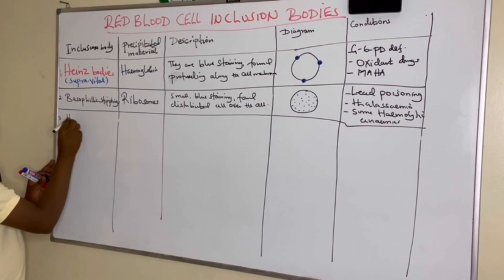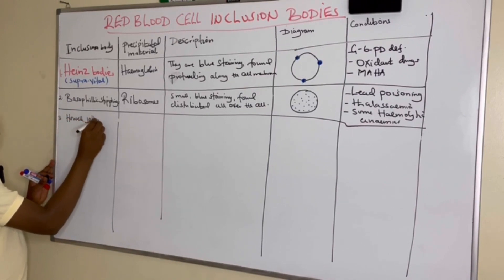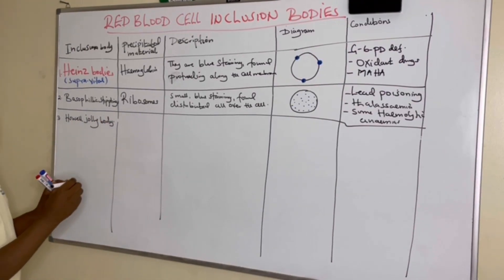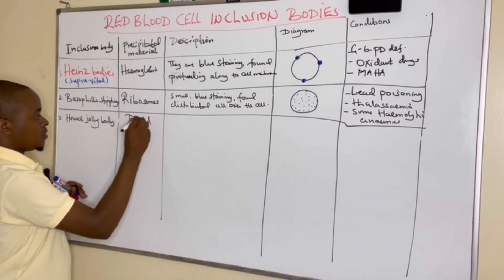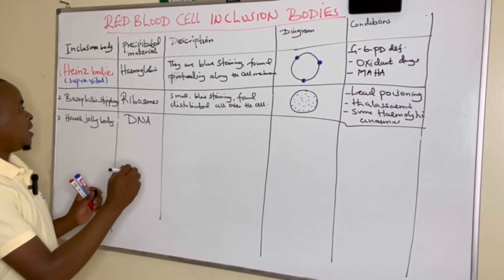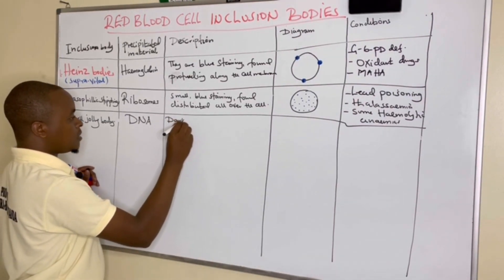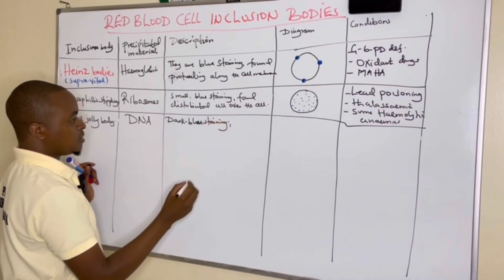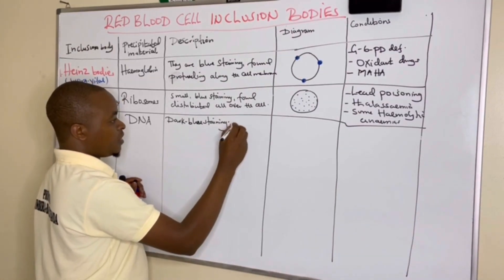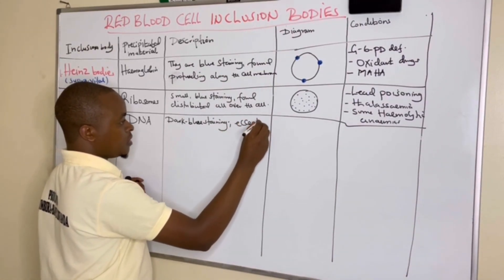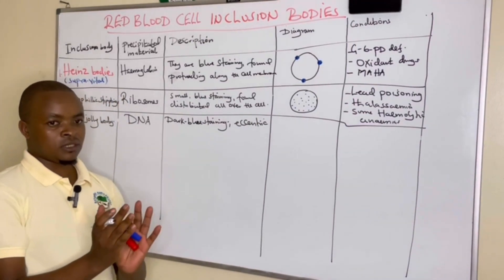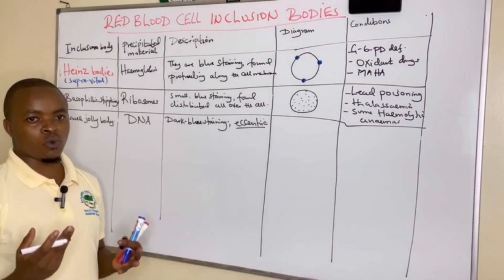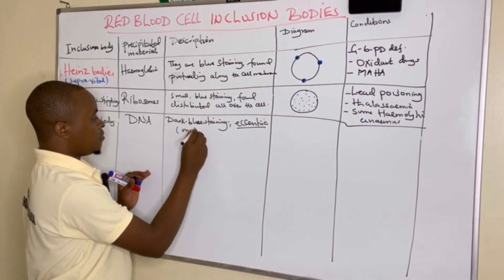The next inclusion body is the Howell-Jolly body. The precipitated material is DNA, and this body is dark blue staining. It is eccentric — not found at the center but at the sides — and it is always a single body per cell; we don't find two.